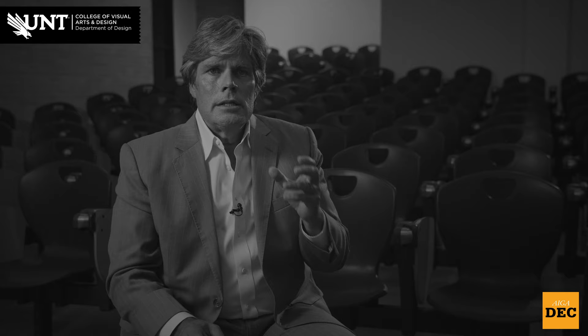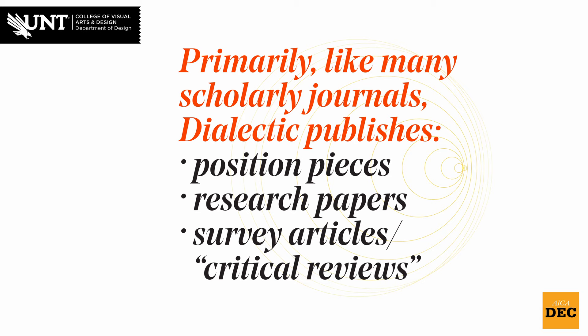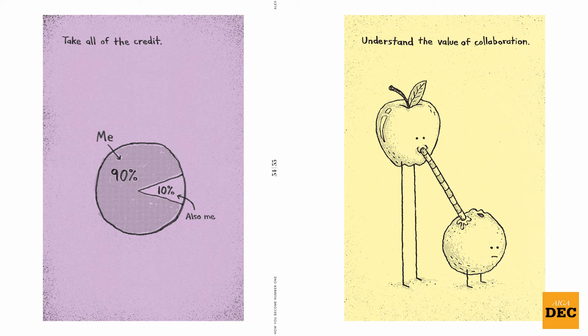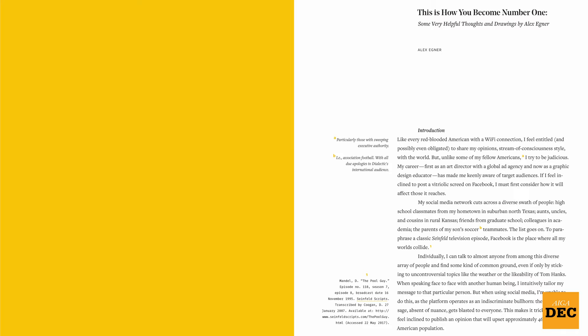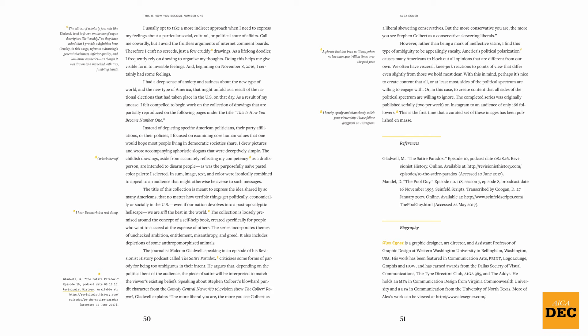Dialectic accepts submissions for publication across seven categories for scholarly writing and one category for visual narratives or essays. The seven categories of scholarly writing are one of three basic types: the position paper, the research paper, and the critical review. Our visual narrative or visual essay category accommodates submissions primarily comprised of visual imagery, like photographs or illustrations, or combinations of these that work together to facilitate visual storytelling. Each visual narrative we publish must be accompanied by about a thousand words of prose providing insights about why it was designed and how it aligns with or counters a specific social, cultural, environmental, or political context.